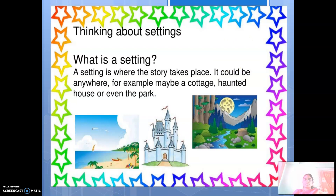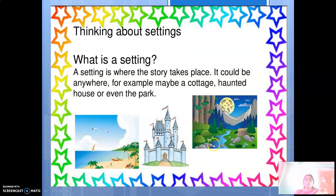Now let's think about settings. What is the setting? From your fourth and fifth standard onwards, you are learning about settings. Settings is where the story actually takes place. It could be anywhere — for example, maybe a cottage, a haunted house, a park, or a school campus, or whatever it is. The place where the story takes place is called a setting. Here I have given examples of settings: a palace, a beach, a forest. All these are called settings — a place where the story takes place.